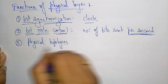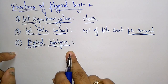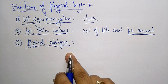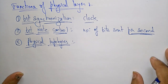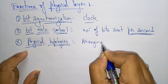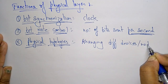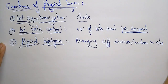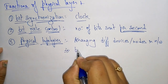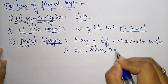The next function is physical topology. Topology means arranging the network using any of the defined structures. The physical layer specifies the way in which different devices or nodes are arranged in a network — using bus topology, star topology, or mesh topology.